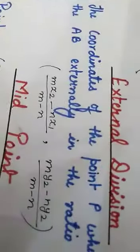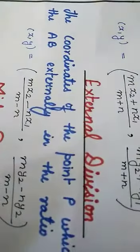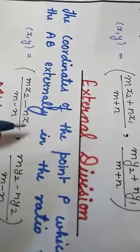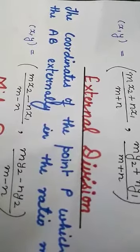Then the coordinates of P(x, y) are: (mx₂ - nx₁)/(m - n) and (my₂ - ny₁)/(m - n).